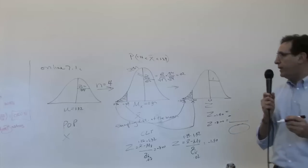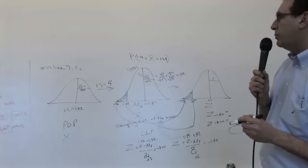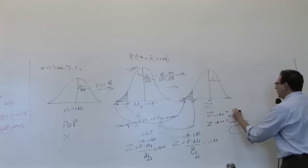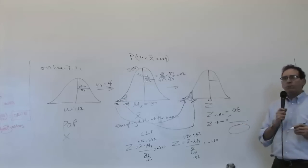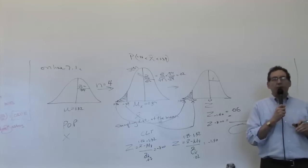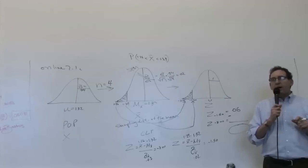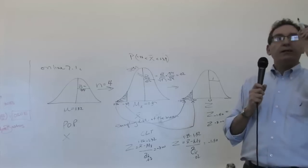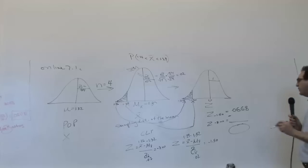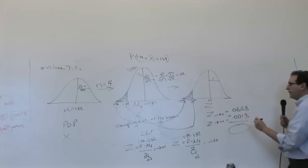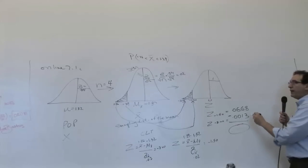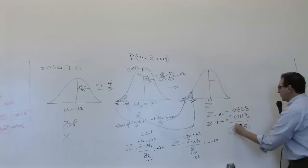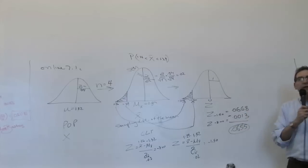So what's the z-score of minus 1.50? 0.0668. And how much is the area below minus 3? Minus 3.00 is what number? It's got to be a really small number, like 0.00 something. 0.0013. And if you subtract them, you're going to get 8 minus 3 is 5, 6 minus 1 is 5, 6 minus 0 is 6. So 0.0655, which you can leave alone, that's the answer to the question.